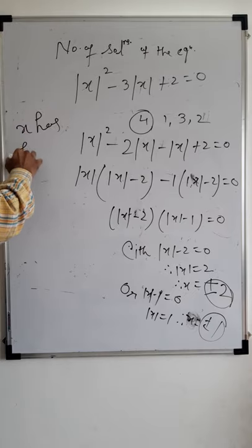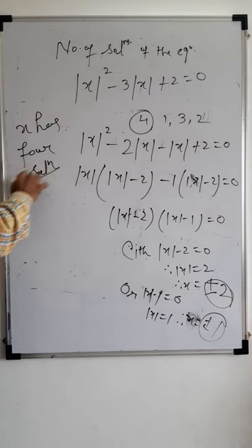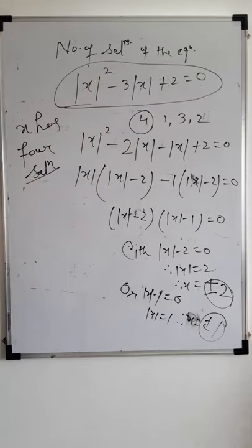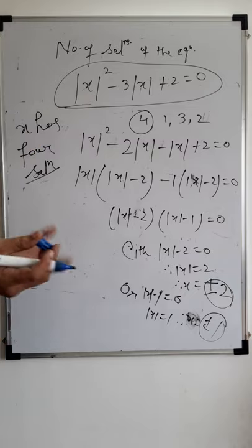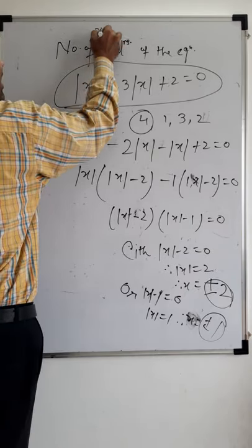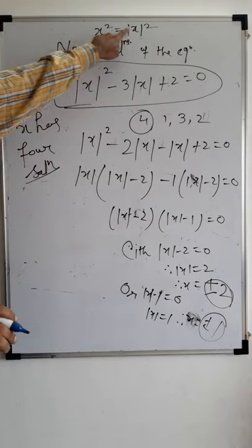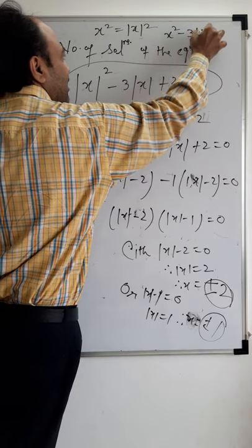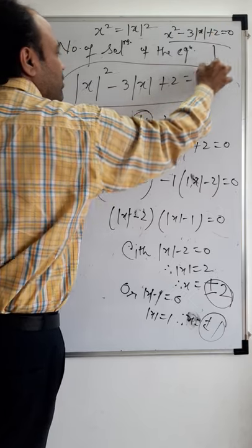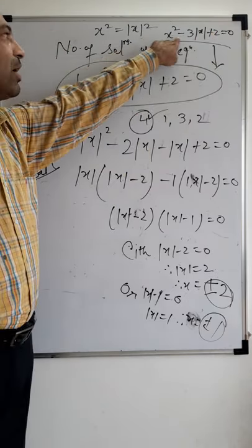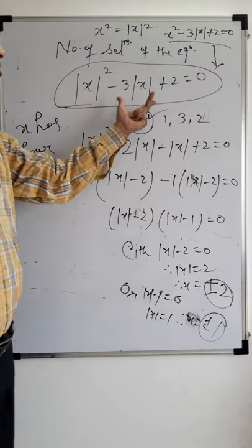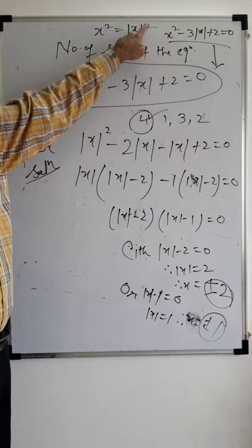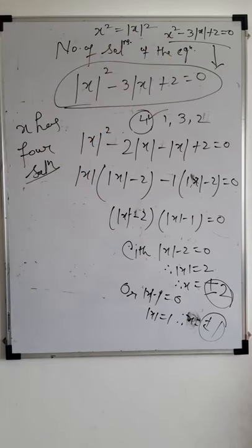Note: |x|² is the same as x², because squaring removes the sign. So even if the equation is written as x² - 3|x| + 2 = 0 (without the mod on x²), the number of solutions is still 4. The meaning of |x|² and x² is the same. This is how we solve modulus-type equations.